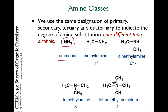Ammonia is a molecule which has nitrogen bonded to three hydrogens. Remember, nitrogen on the periodic table has five valence electrons to begin with, so it has a lone pair on the nitrogen as well. And so the structure of ammonia looks like this.